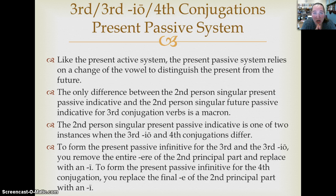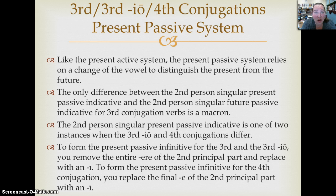The first hiccup, as you'll see in the charts coming up: the second person singular present passive indicative and future passive indicative are practically identical — the only difference is a macron. The future has a macron. The second person singular present passive indicative is also one of only a few times when the third IO and the fourth are not going to be identical.